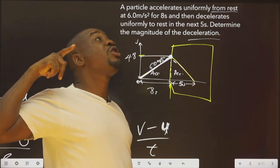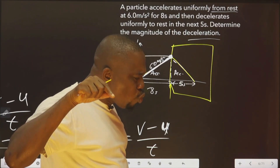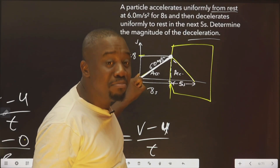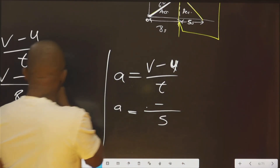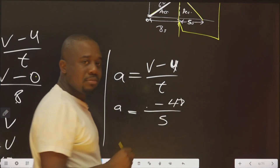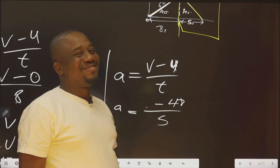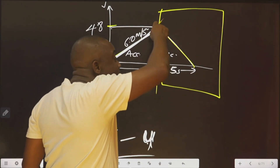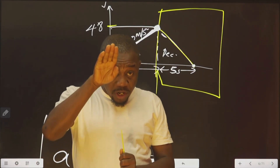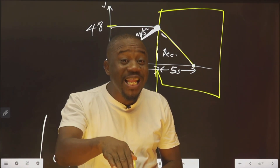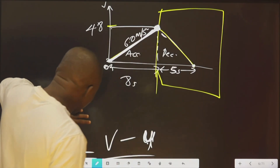You stopped at 48 meter per second. When you reach 48, you start coming down. So the initial velocity for the deceleration is 48 meter per second. Now, what is the final velocity for the deceleration? The particle decelerates to rest, so the final velocity is 0. As it slows: 48, 40, 30, 20, 10, 2, 0 — you stop. So the final velocity here is 0.